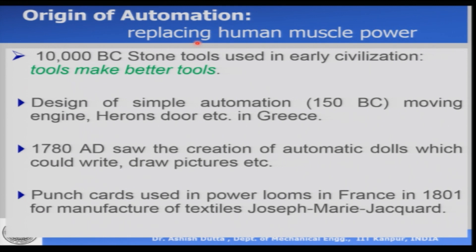Automation essentially means replacing human muscular power. You can have different kinds of automation — at home, we can have home automation; in office, office automation; in industry, industrial automation. In all these applications, it is human muscular power which is being reduced in some form by using a machine or a mechanism. Interestingly, this business of automation has been going on for thousands of years. Right from about 10,000 BC or more, human beings were using different kinds of tools — stone tools, then iron tools, then copper tools — and these tools were used to make better tools.